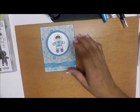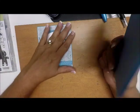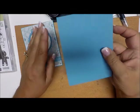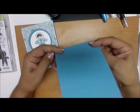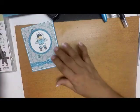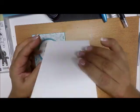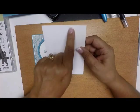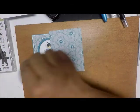What we need for paper: our card base is marina mist, it's four and a quarter by 11 scored at five and a half. Then we have a matting layer in the middle which is whisper white, and that is four and an eighth by five and three eighths.